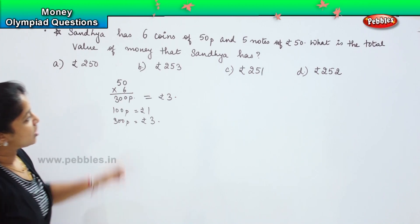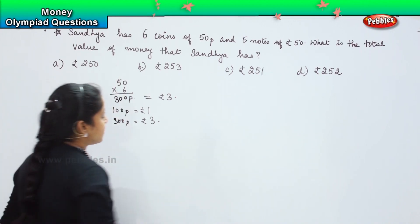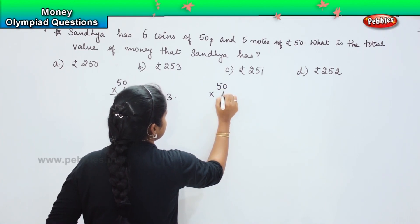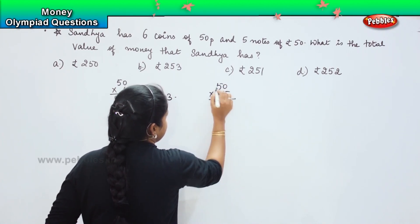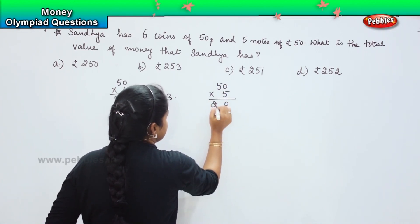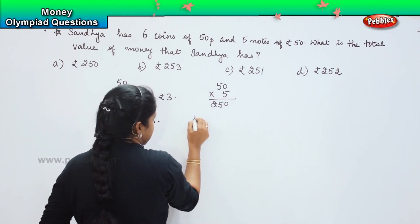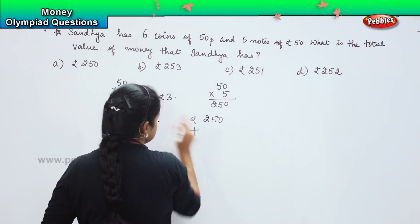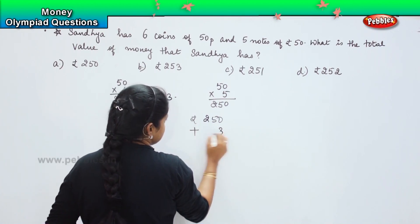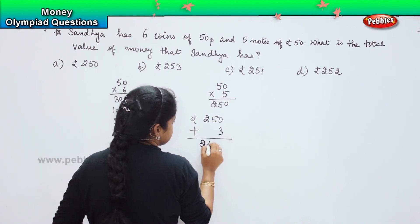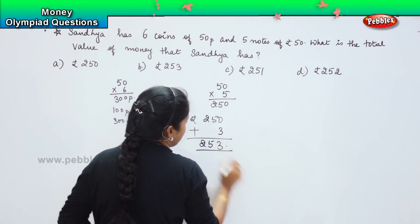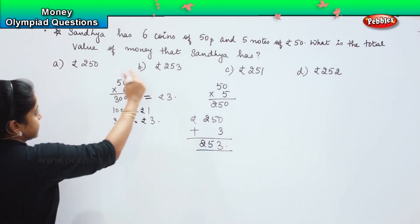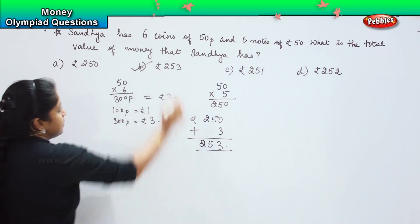She has 5 notes of rupees 50, which means 50 into 5 — 5 fives are 25 — so she has a total of 250 plus 3 rupees. She is having the value of 253. So where is 253? It is option B.